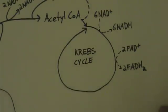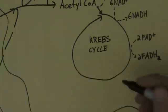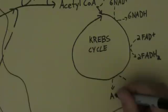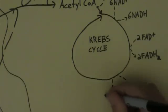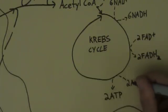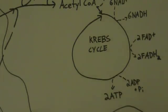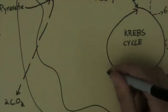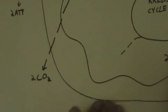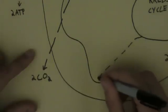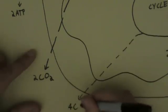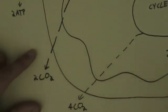The Krebs cycle also produces two molecules of ATP from two molecules of ADP and Pi. And it releases four molecules of carbon dioxide — I'm going to do a dotted line over here because the carbon dioxide leaves the mitochondria.